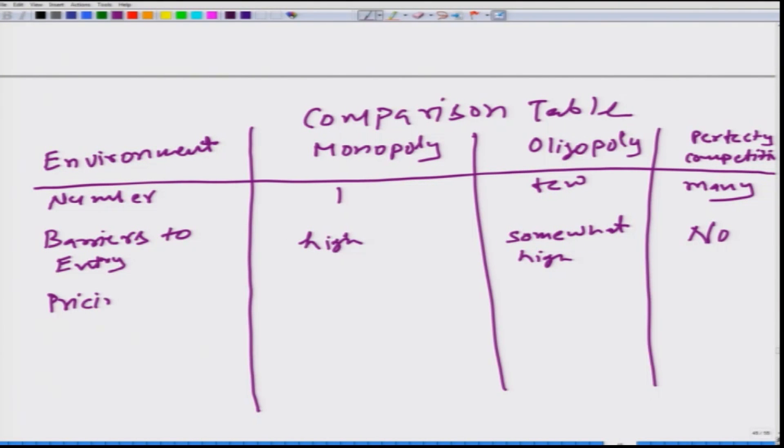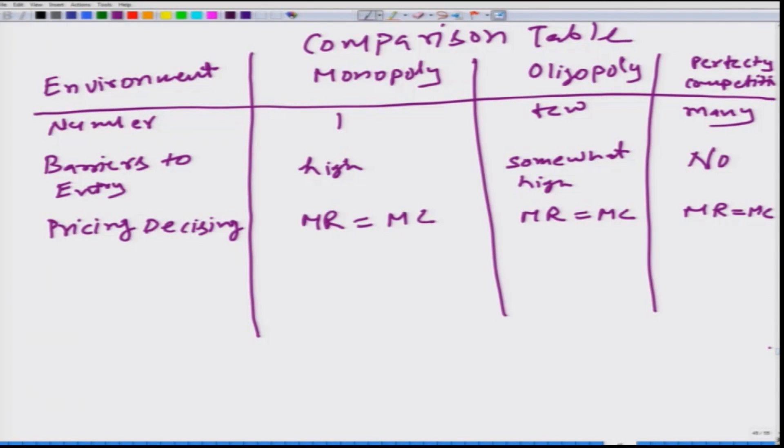Pricing decision. Here it is common to all the settings. MR has to be equal to MC in all these three settings. Because if MR is not equal to MC, firm can increase its profit by increasing the production if MR happens to be greater than MC. And if MR is less than MC, that firm would be better off by decreasing the production, no matter which setting that this firm is operating in. This would be true.